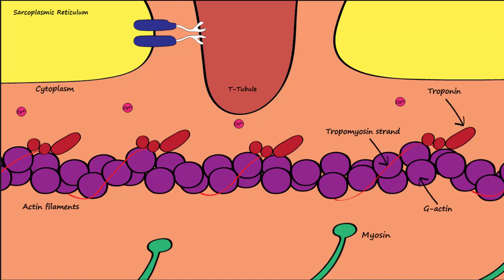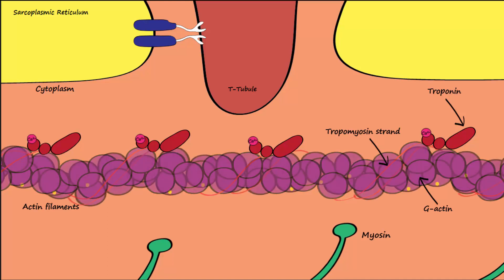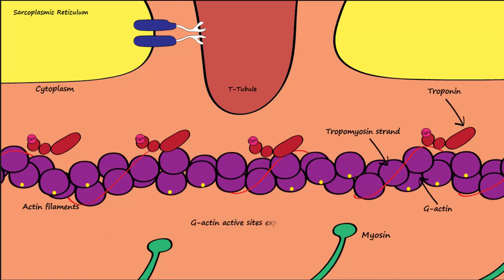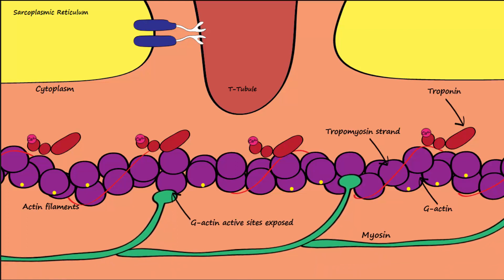Calcium binds to troponin, causing a conformational change in troponin, which then causes tropomyosin to move, uncovering the G-actin active sites, so that myosin can now attach to the actin to form a crossbridge and initiate muscle contraction.